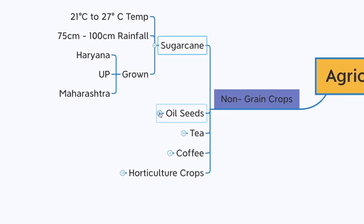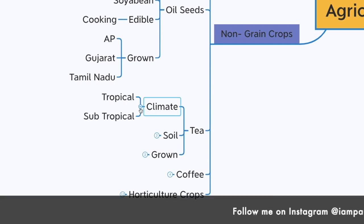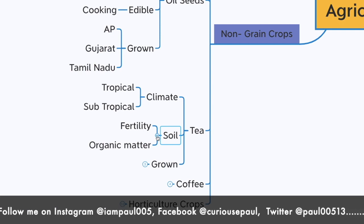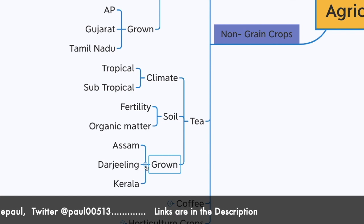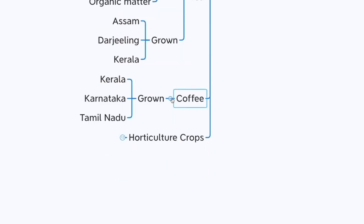Oil seeds include mustard, coconut, and soybean — popular edible varieties used in cooking — and are grown in Andhra Pradesh, Gujarat, and Tamil Nadu. Tea requires a tropical and subtropical climate, soil of high fertility and organic matter, and is grown in Assam, Darjeeling, and Kerala. Coffee is grown in Kerala, Karnataka, and Tamil Nadu in large quantities.